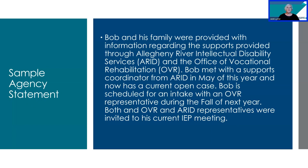Here's an example of a sample agency statement: 'Bob and his family were provided with information regarding the supports provided through the Allegheny River Intellectual Disability Services (ARID) and the Office of Vocational Rehabilitation (OVR). Bob met with a supports coordinator from ARID in May of this year and now has a current open case. Bob is scheduled for an intake with OVR during the fall of next year. Both OVR and ARID representatives were invited to his current IEP meeting.'